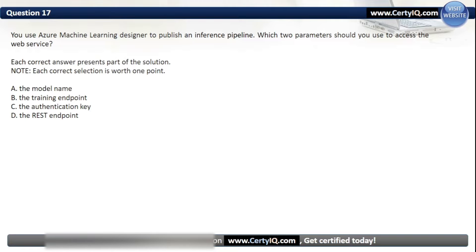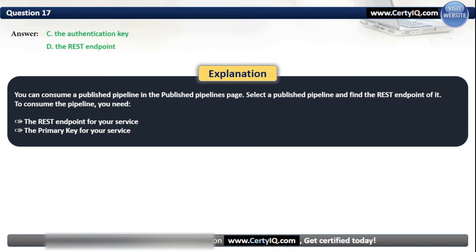Question 17. You use Azure Machine Learning Designer to publish an inference pipeline. Which two parameters should you use to access the web service? Options: A. the model name, B. the training endpoint, C. the authentication key, or D. the REST endpoint. The correct options are C and D. You can consume a published pipeline from the published pipelines page. Select a published pipeline and find the REST endpoint. To consume the pipeline, you need the REST endpoint for your service and the primary key for your service.